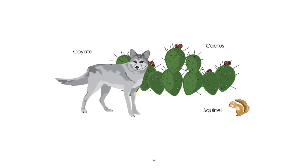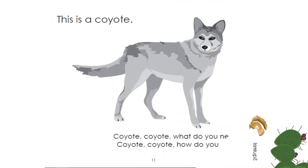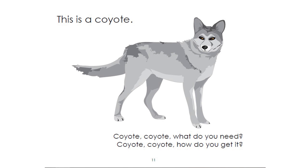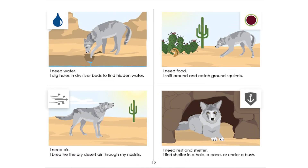This is a coyote. What do you need, coyote? Predict what you think a coyote needs and how it might get it. Students respond: food, water, cactus, the coyote needs meat. Let's turn the page, Dan. Remember our icons — can you point to the water icon? Can you point to the food and energy icon? Can you point to the air icon? And then point to the shelter and anchoring icon.